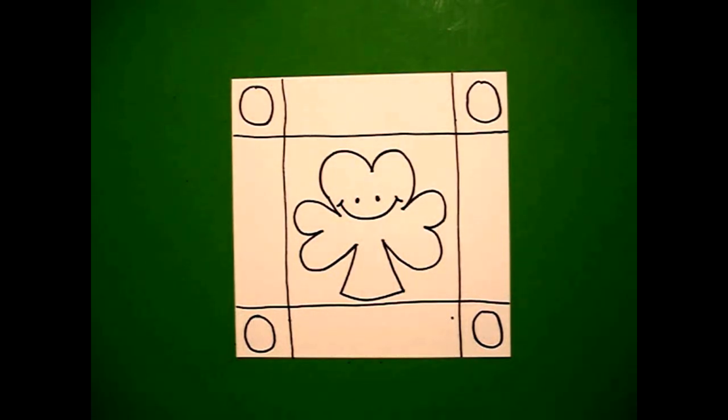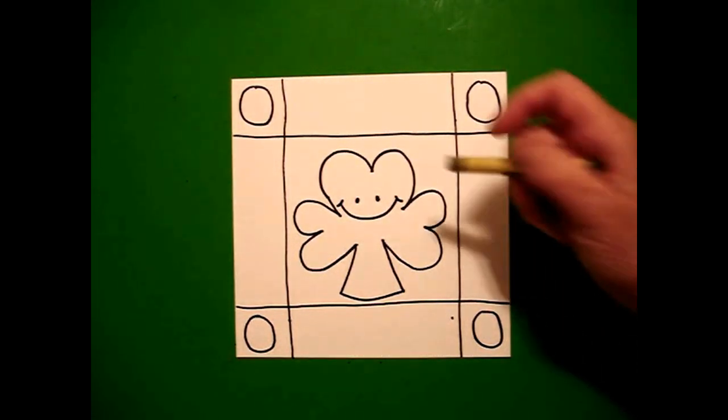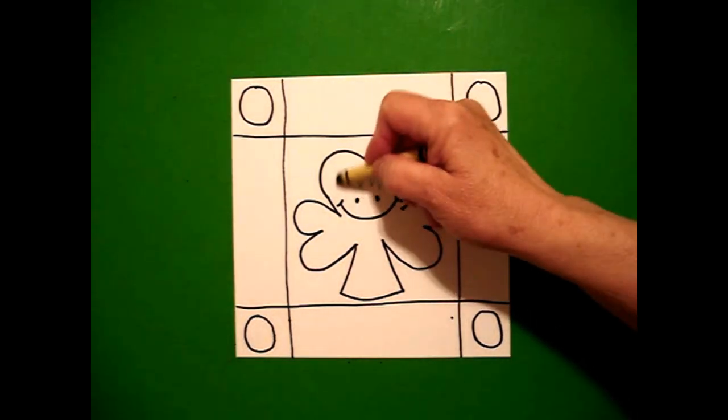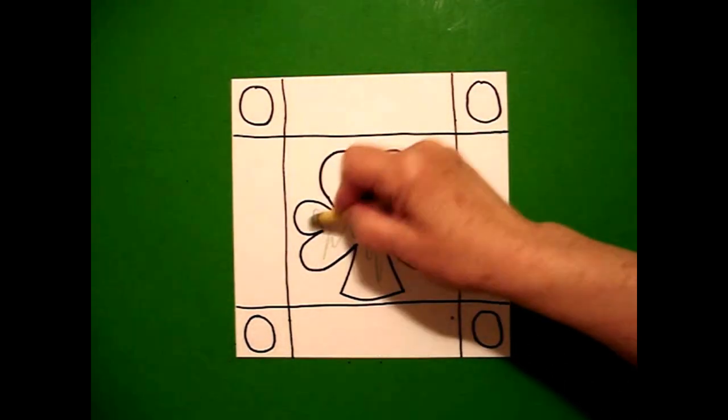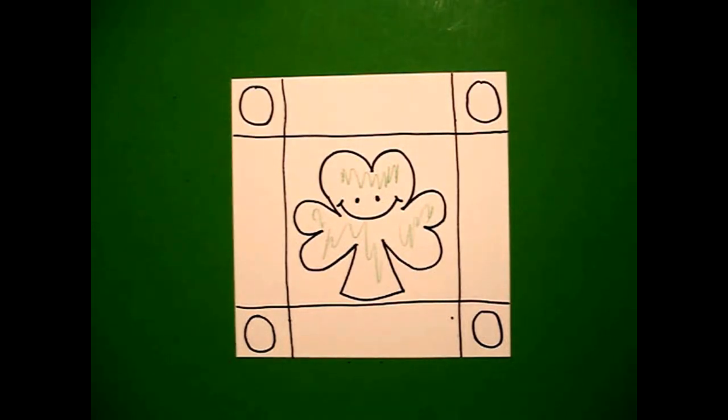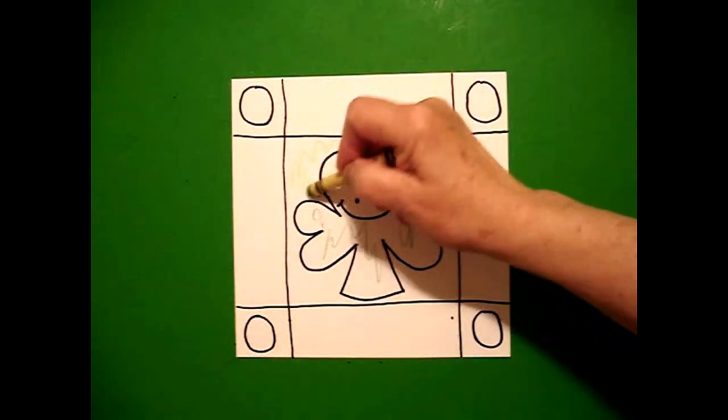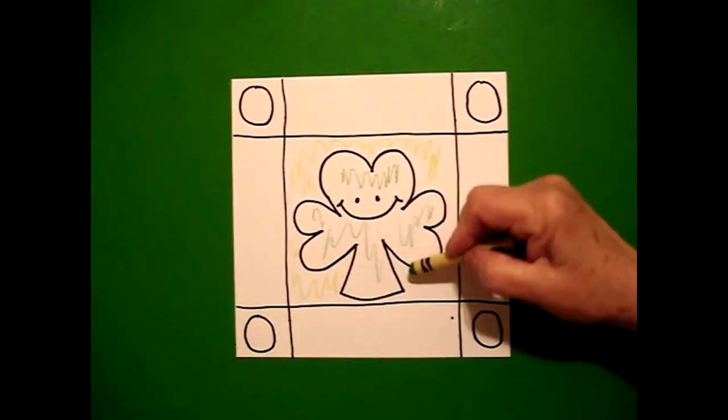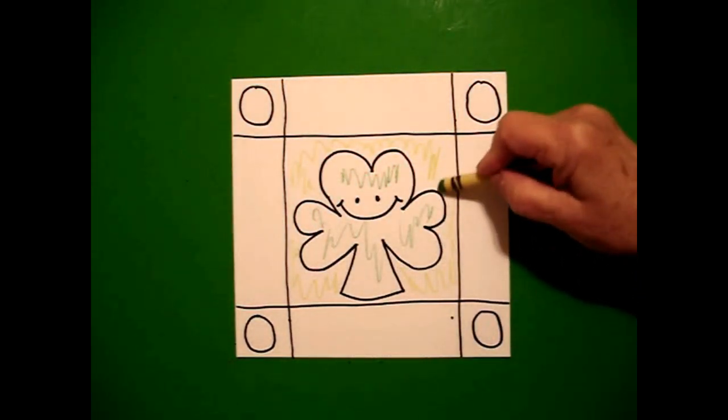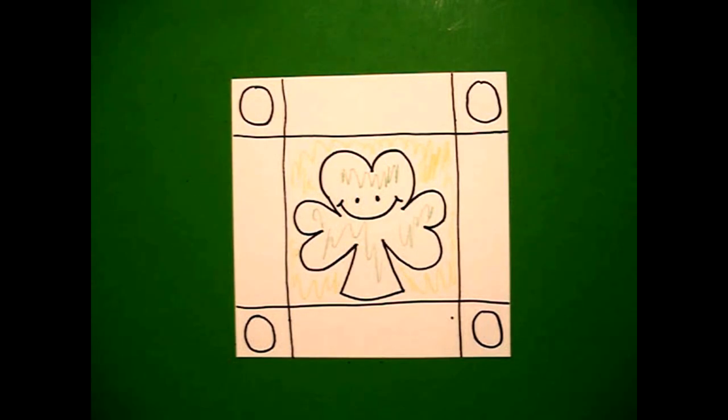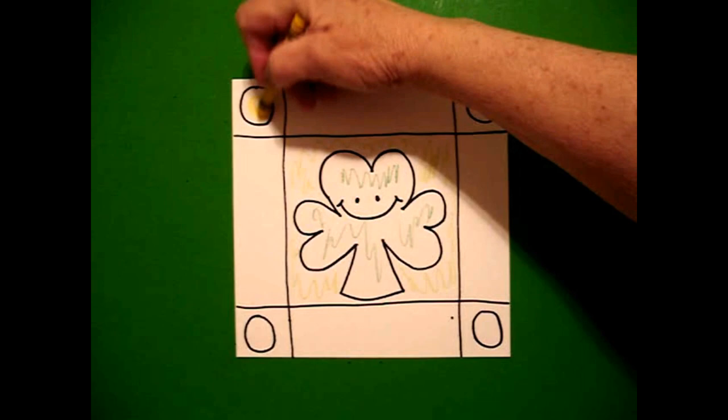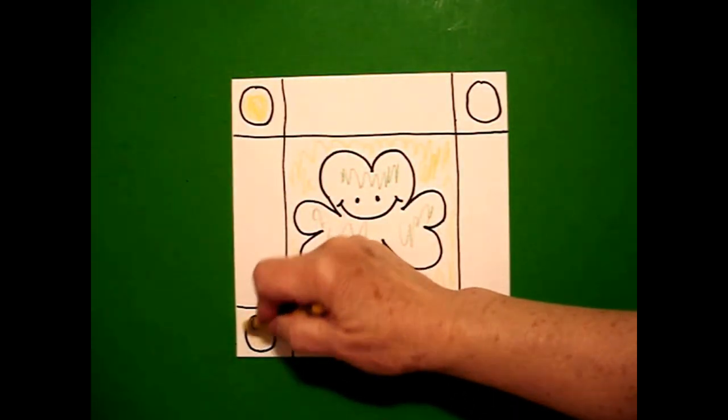Okay, let's see how we're going to color this in. The first thing I'm going to do is color my shamrock dark green and then I'm going to come in, if you have it, and color the outside part light green. If you don't have light green, just use your regular green and don't press it as hard. Then I'm going to color each one of my circles yellow because I'm going to pretend that's leprechaun gold.